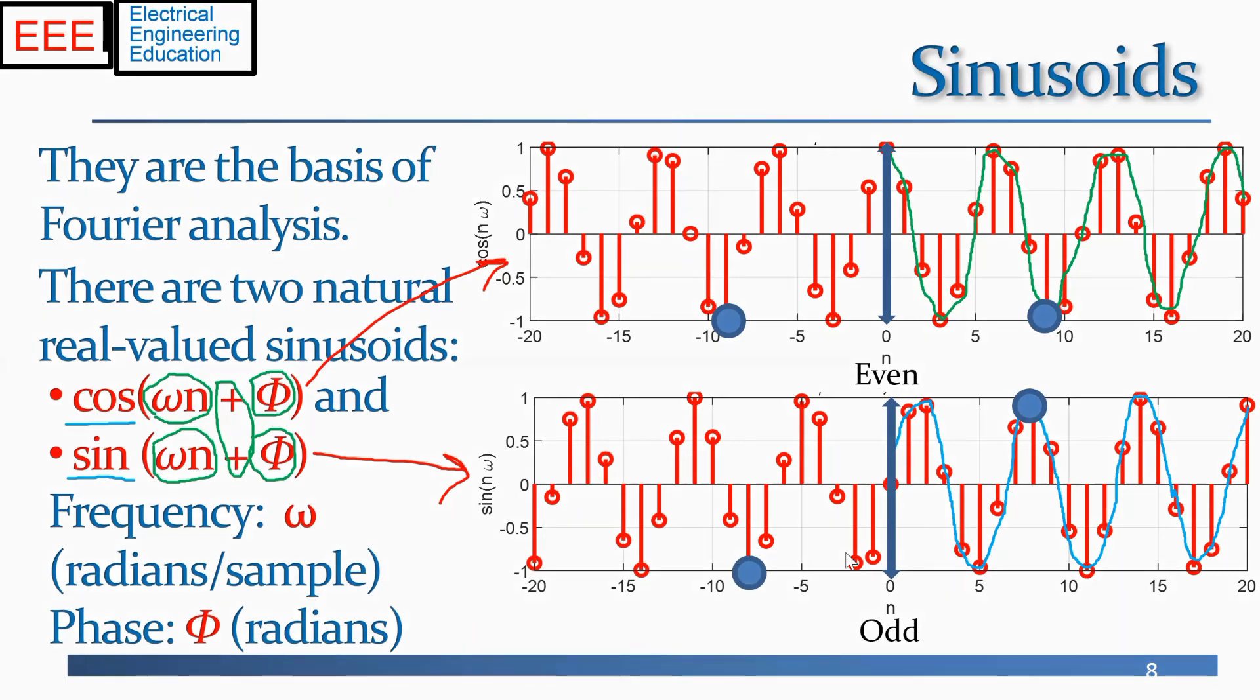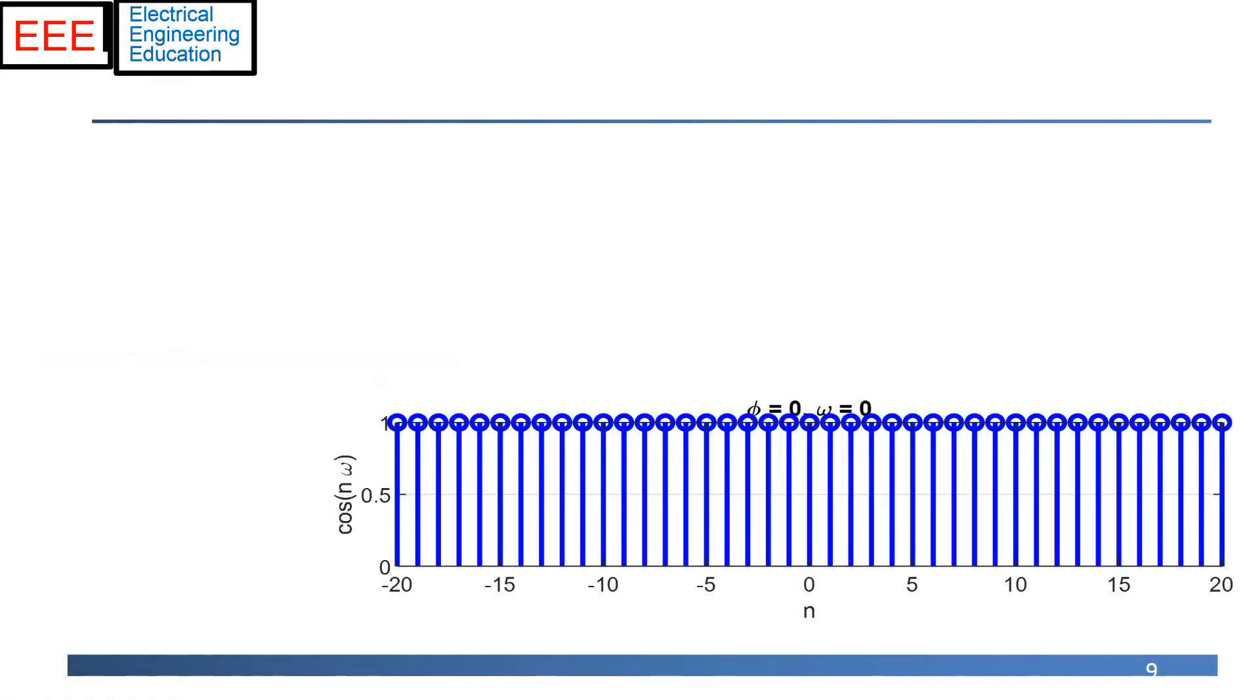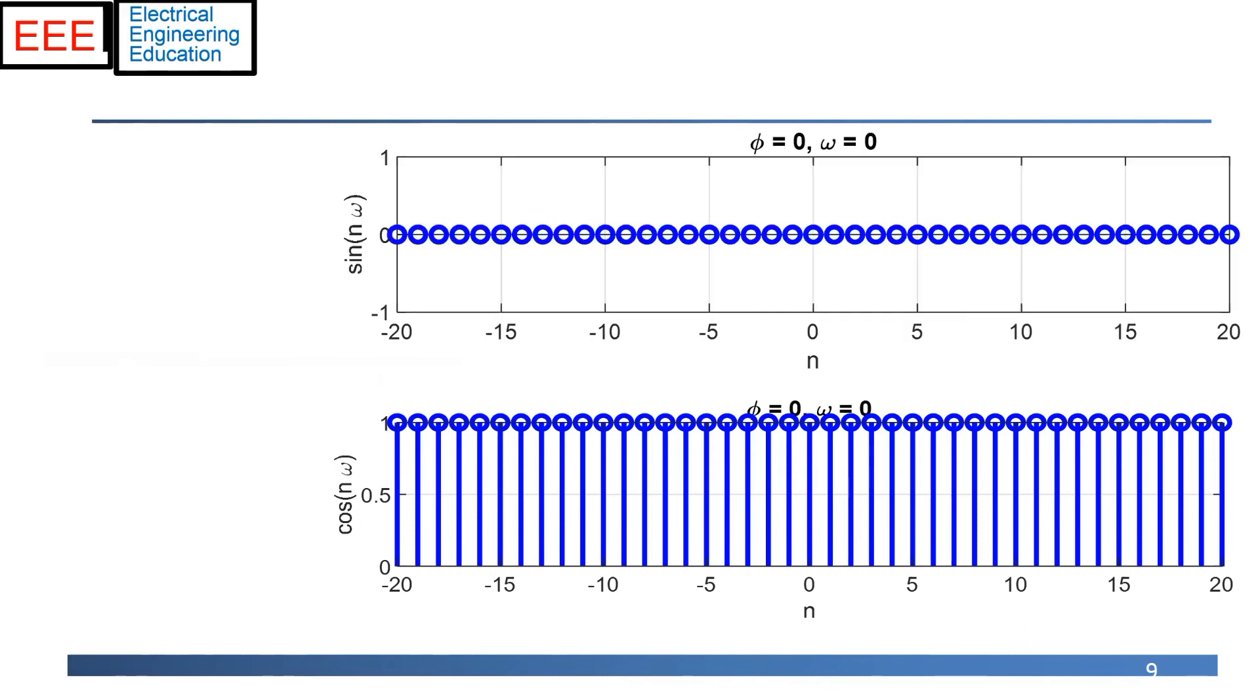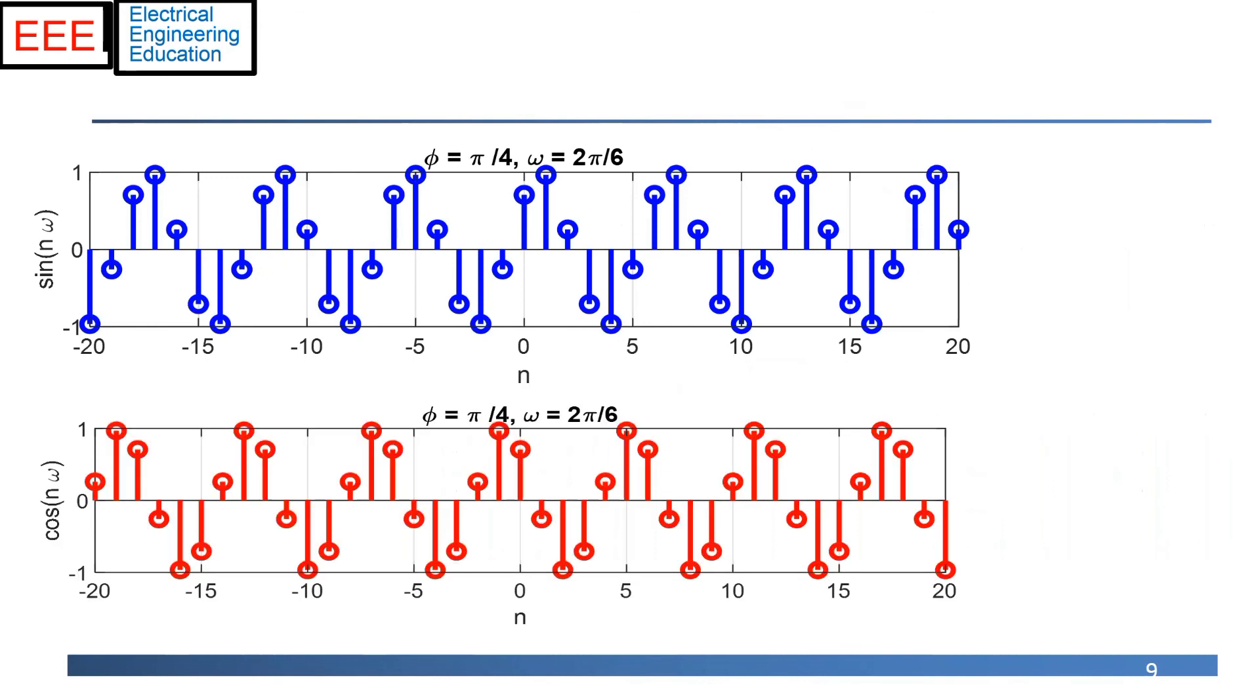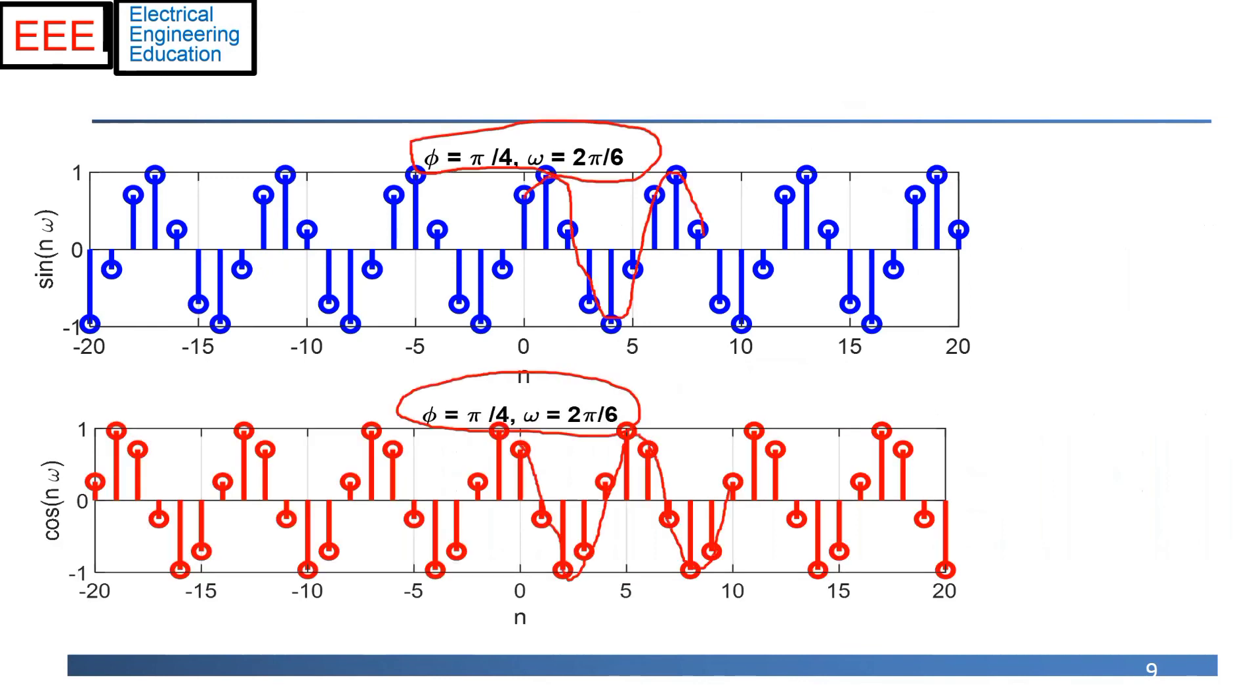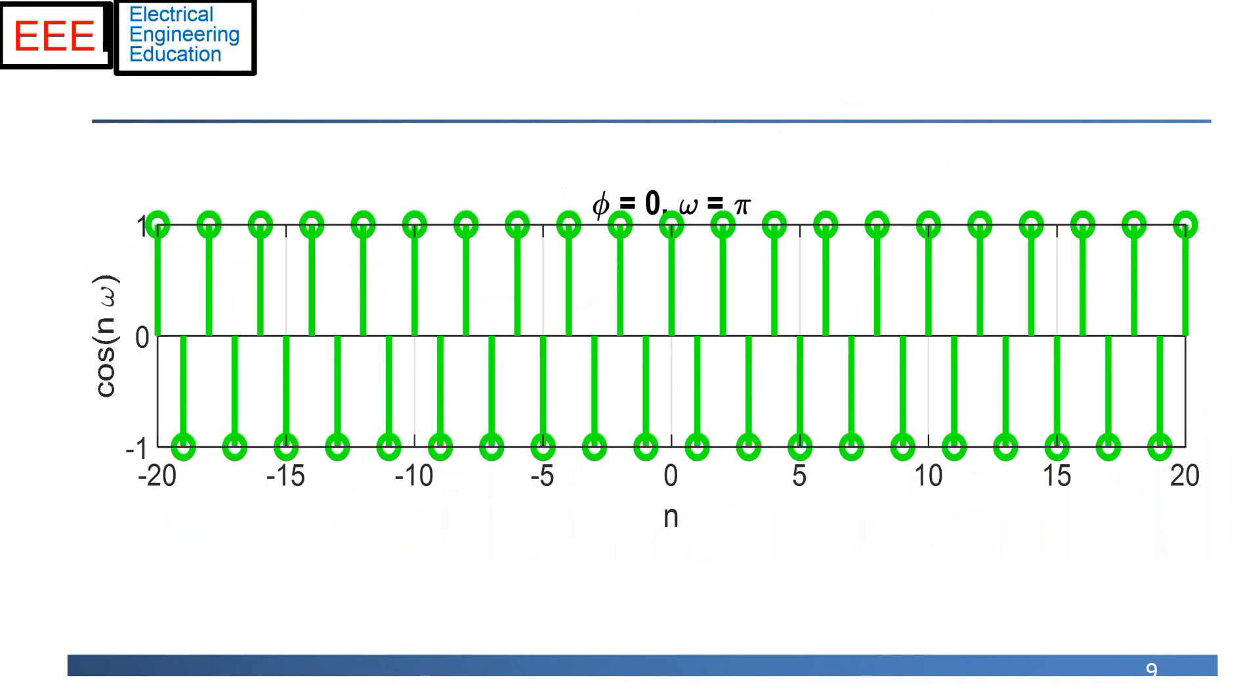So those are sine waves. Some simple examples. Cosine of zero n. So here, omega equals zero. We see the signal is very simple. It doesn't oscillate at all. Sine with the same frequency also doesn't oscillate at all, but it also takes the value zero for all time. Here's an example of sine with frequency pi over four and phase of two pi over six. And we see that it is again an oscillating signal with a certain oscillation frequency. And this is an interesting signal at the bottom. Cosine of pi n, you see is an oscillation between plus and minus one, oscillating very quickly. So these are examples of discrete time sine waves.